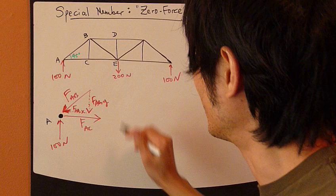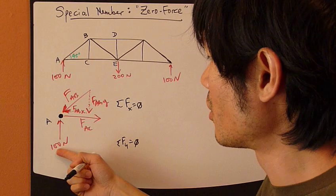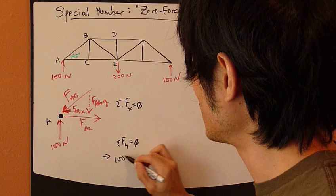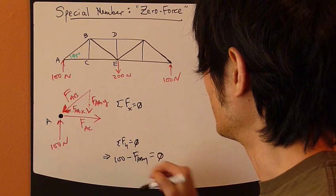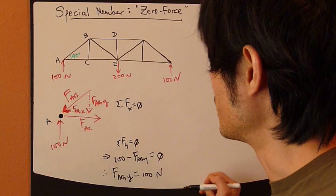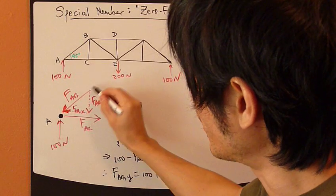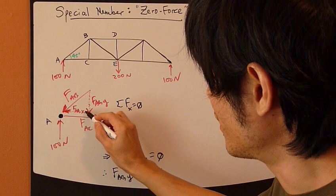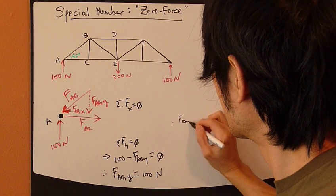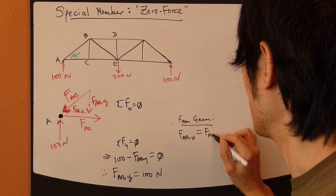Let's do some calculations. Sum of forces X direction equals zero. Sum of forces Y equals zero. Since I know the Y force and it's given, I'm going to start with this. So 100 minus FABY. That's it. The Y is a vertical force. So FABY equals 100 Newton. So I know this is 100. And since it's a 45 degree angle, so this triangle right here is an isosceles. 45, 45, 90. So this means that these two sides are the same. So therefore, from geometry, FABX also equals to 100.